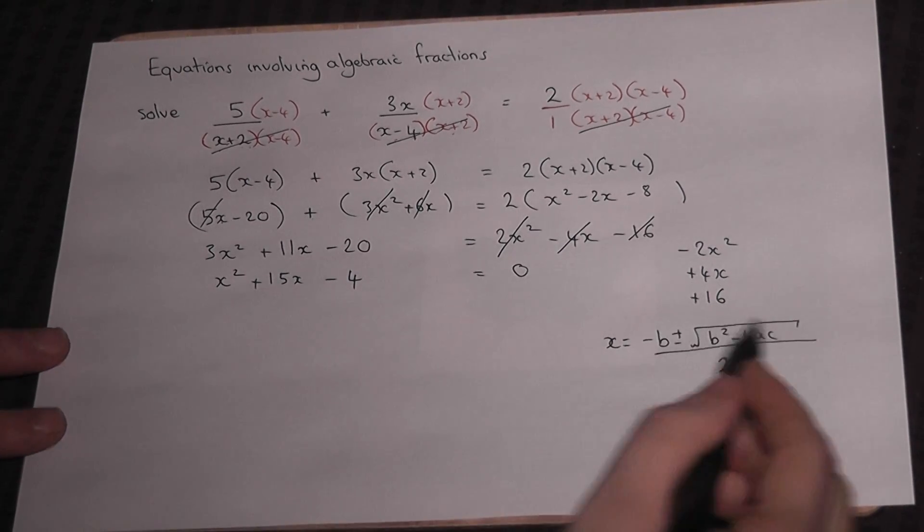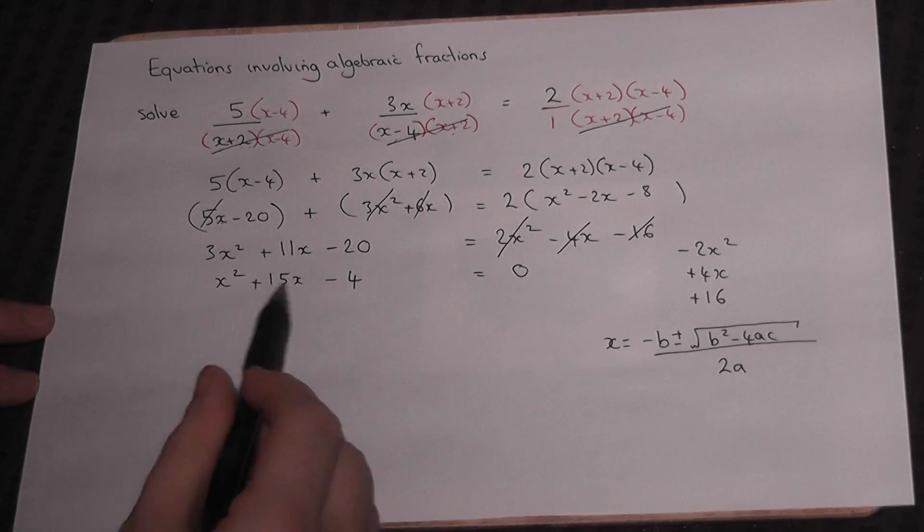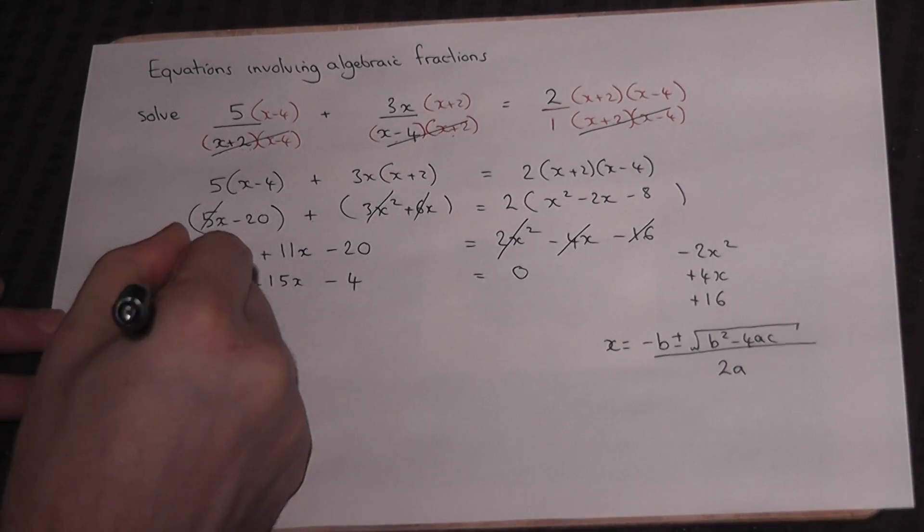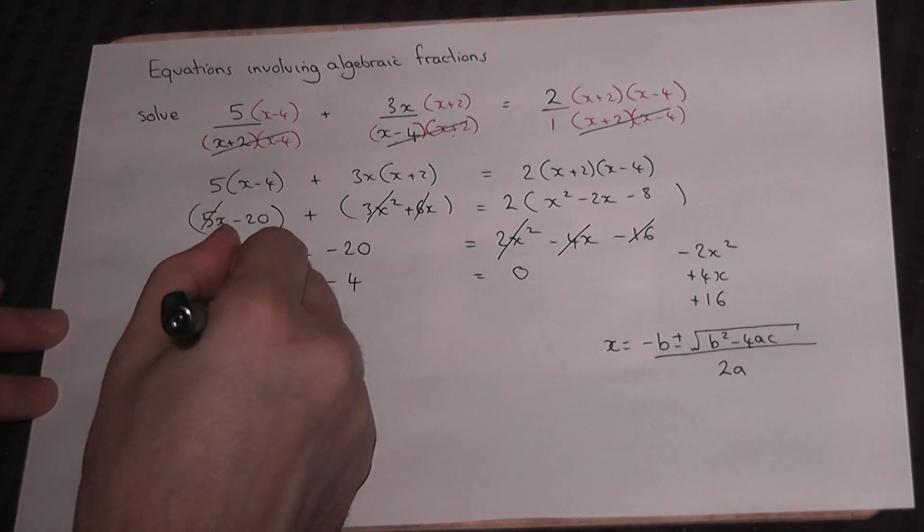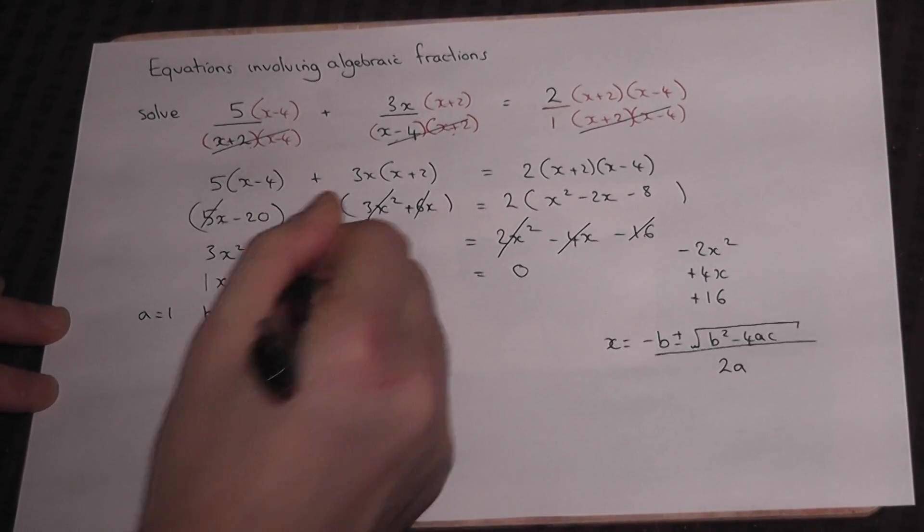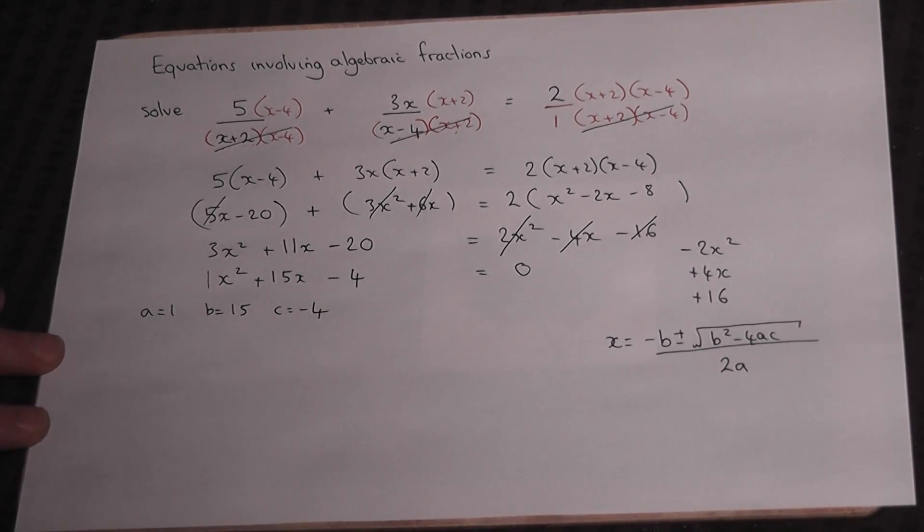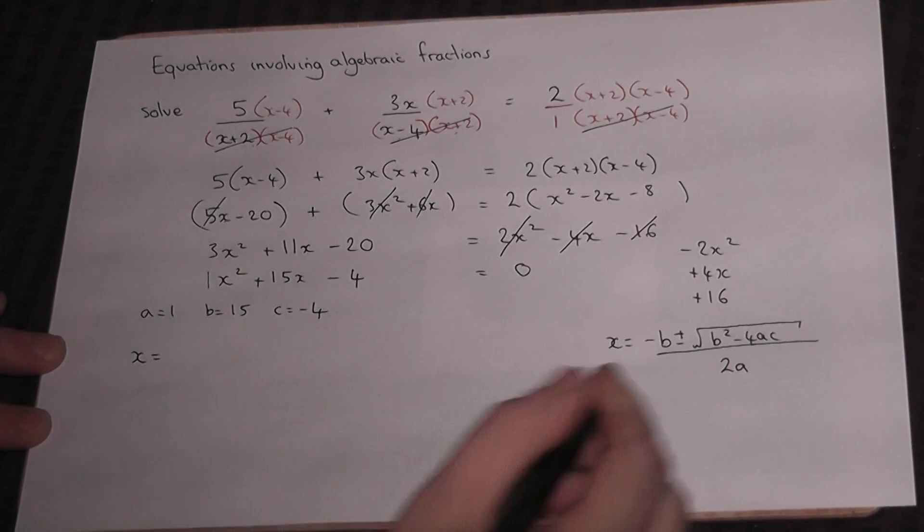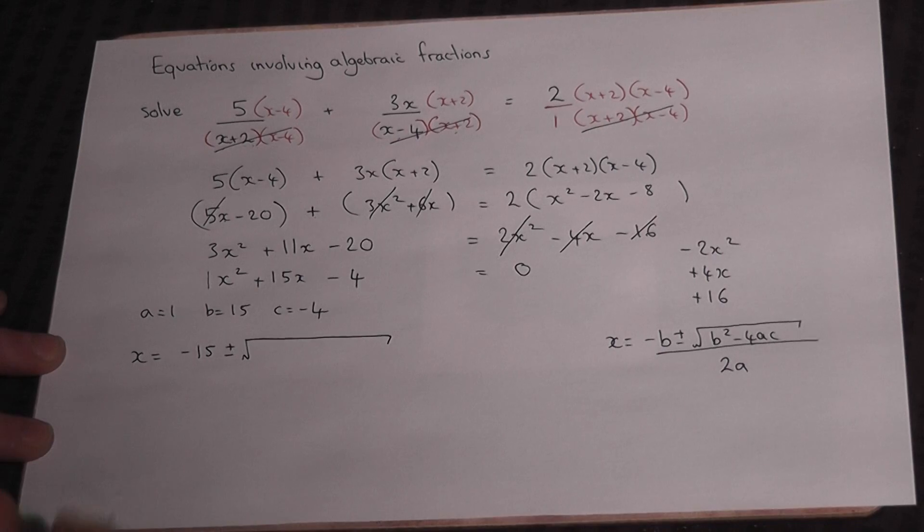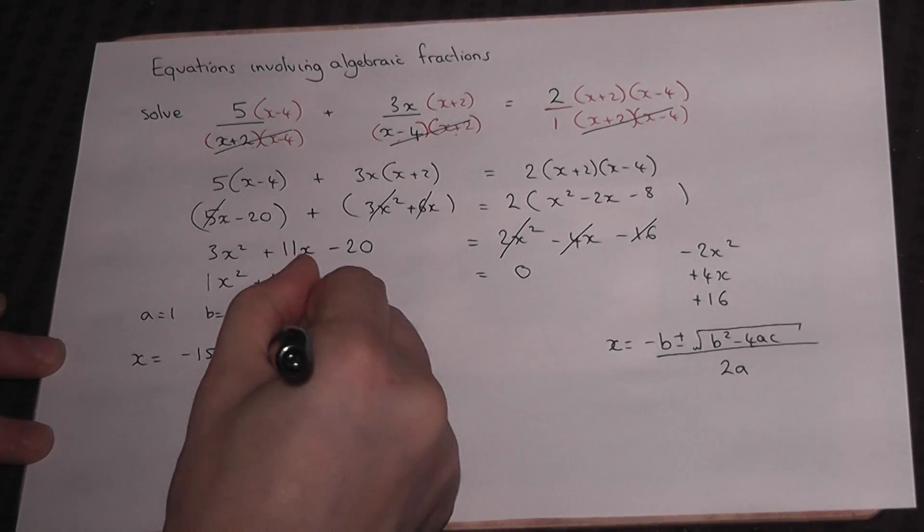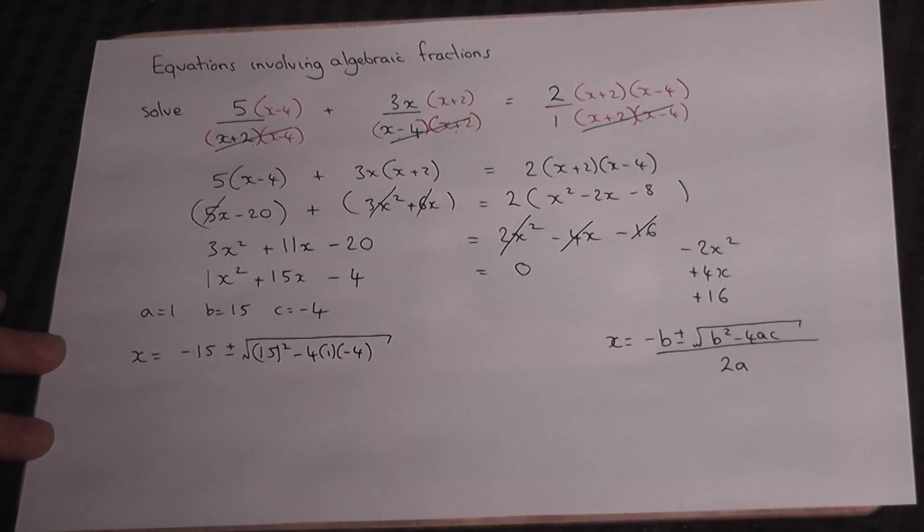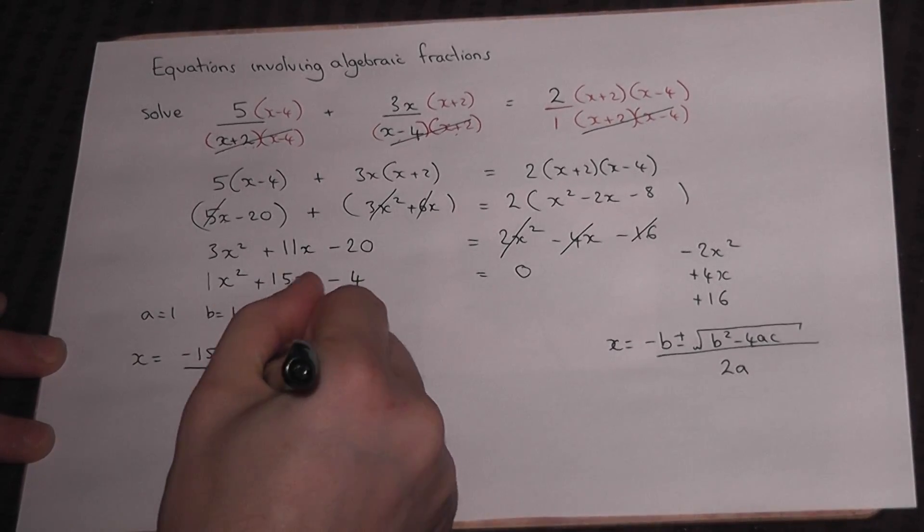The a, b, and c are the coefficients in the equation. So a is the number of x squared, so a equals 1, b equals plus 15, and c equals minus 4. So x equals minus b, minus 15, plus or minus the square root of 15 squared minus 4a lots of c, c is negative, all over 2 lots of a.